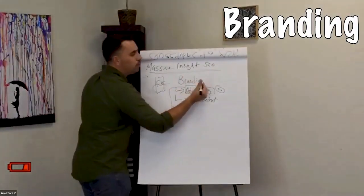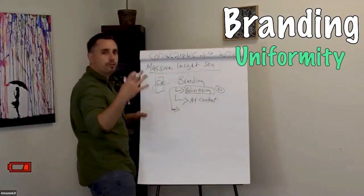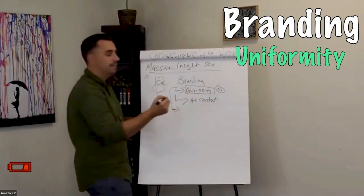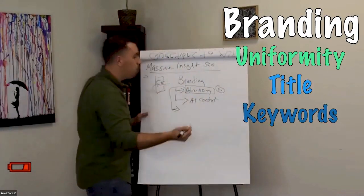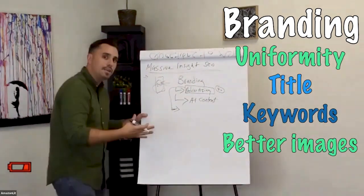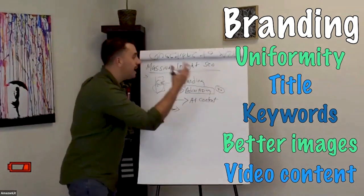So branding, which we talked about, which was uniformity through A-plus content, through title, through the keywords, through better images, through video content on their listings.